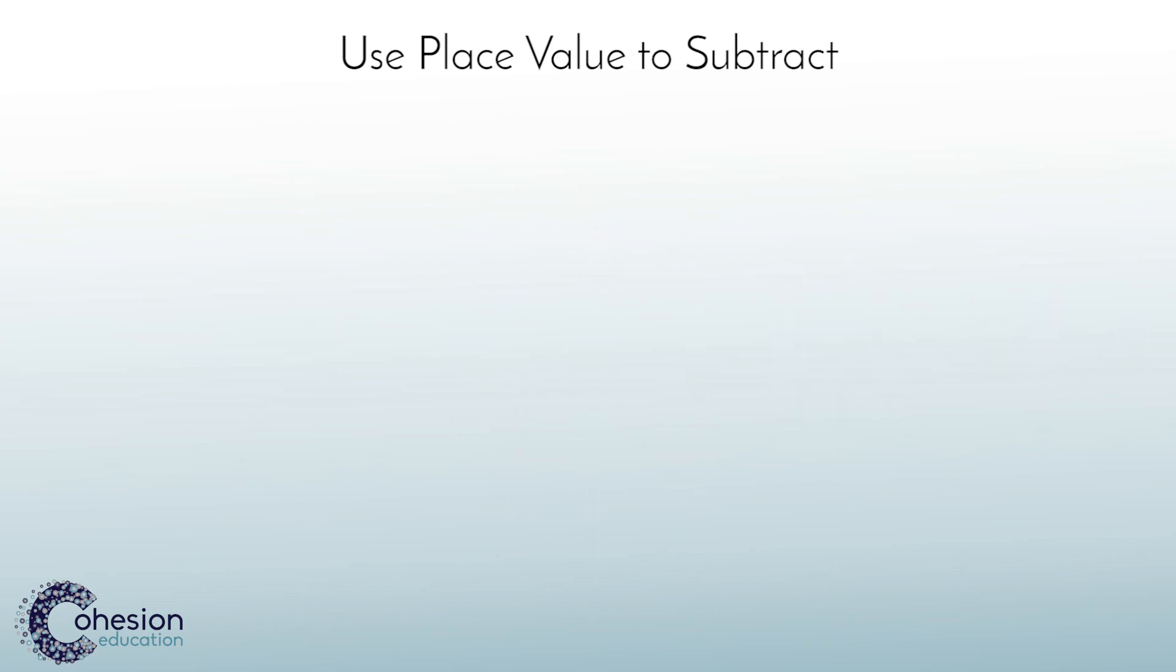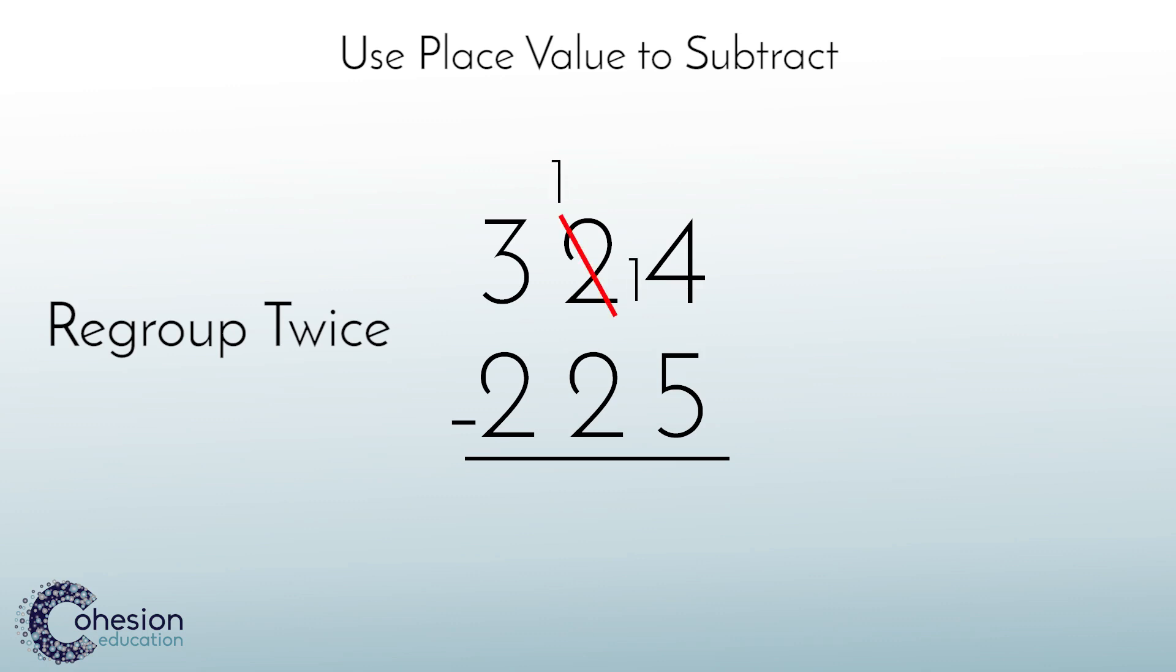Sometimes students must regroup twice in one question. Let's change our original question to 324 minus 225 to illustrate. The same process applies as before. So, we grouped one ten to make fourteen. Fourteen minus five equals nine.